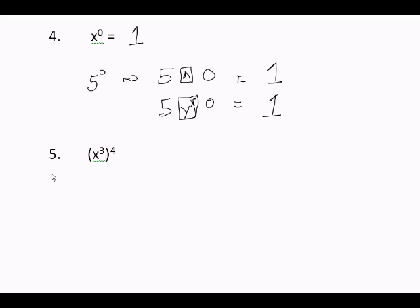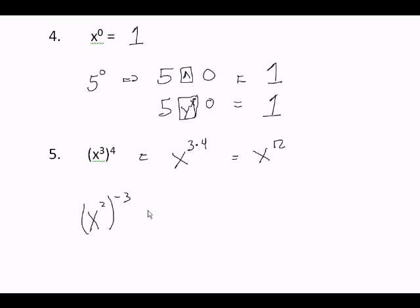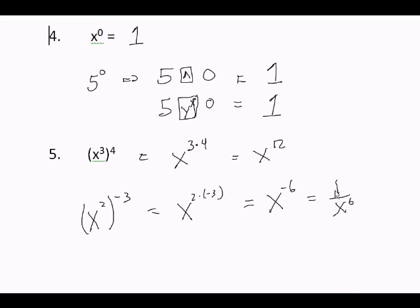Rule number 5: power raised to a power. When you have one base and a power raised to another power, the base stays the same and you multiply the powers. So (X to the 3rd) to the 4th power: 3 times 4 equals X to the 12th power. Another example: (X to the 2nd) to the negative 3 — multiply the powers: 2 times negative 3 equals X to the negative 6. Applying rule 3, flip the base: the final answer is 1 over X to the 6th.